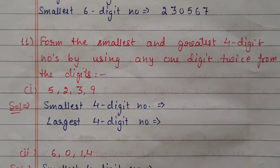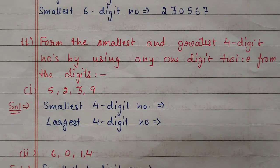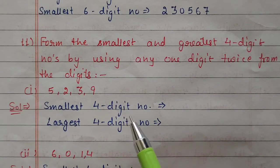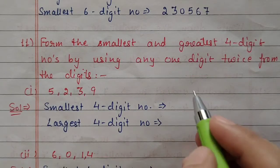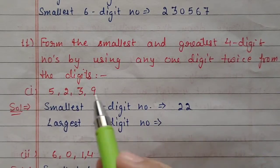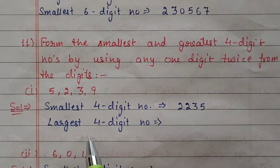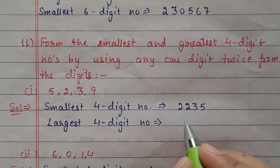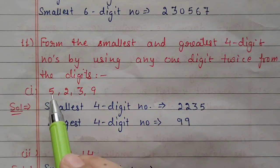Next question number 11: form the smallest and greatest 4-digit number by using any one digit twice from digits 5, 2, 3, 9. To make the smallest number, always repeat the smallest digit twice. The smallest digit here is 2, so repeat 2 twice; remaining two places fill with 3 and 5, giving 2235. To make the largest 4-digit number, repeat the largest digit twice. 9 is largest, repeat 9 twice and keep at leftmost side, then 5 and 3, giving 9953.